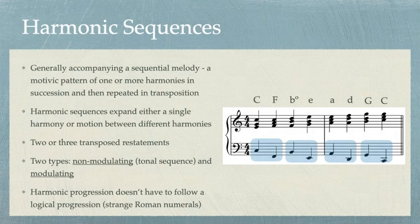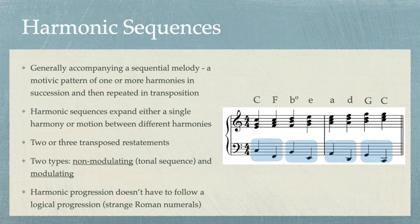In tonal music, the harmonic sequence is a motivic pattern of one or more harmonies in succession that is restated in transposition, usually two or three times, preserving the same relative motion of each part or voice, just like we saw in melodic sequences. By creating harmonic and tonal variety with a unified pattern, sequences serve as a means for musical development. Two types of sequences are commonly used: non-modulating or tonal sequence, which keeps the restatements all in a single key, or modulating sequence, which may traverse several keys.